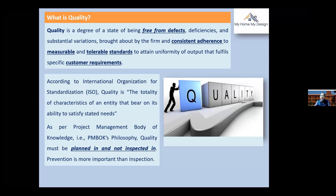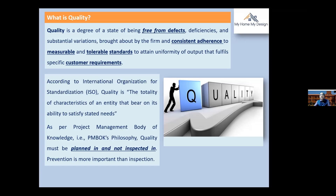As per the Project Management Body of Knowledge (PMBOK), quality must be planned in and not inspected in — prevention is more important than inspection. When we go for inspection, quality has to already be in place. This is what we call quality assurance. Whatever assurance we give to the customer has to be documented in proper language with proper records. When the same thing is implemented on the ground, it is called quality control.